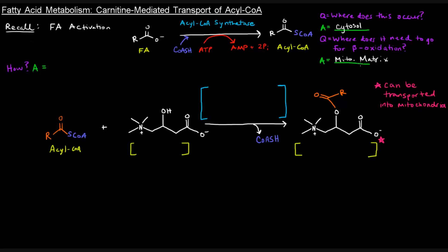So if that's the case, these acyl-CoAs upon activation have to somehow get into the mitochondrial matrix. Mitochondria are membrane-bound organelles, and specifically they have two membranes — an outer membrane and an inner membrane. Membranes in general are selectively permeable. So how do these acyl-CoAs actually get into the mitochondrial matrix to be broken down via beta-oxidation? The answer is in the title: carnitine-mediated transport of acyl-CoAs.